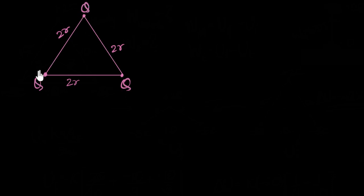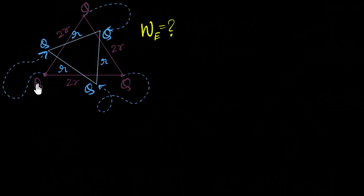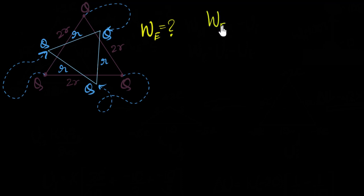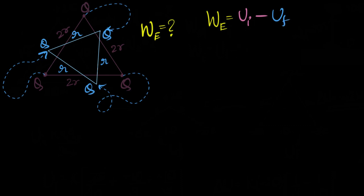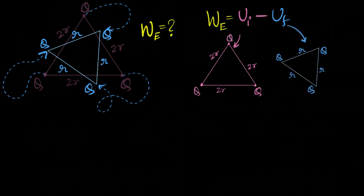Let's quickly try one more. We have three identical charges kept at the vertices of an equilateral triangle. An external agent — me — moves all three charges so that they form a new equilateral triangle with edge length r. Moving it very slowly without any acceleration, what is the total work done by the electric field? The work done by the electric field is the negative of the work done by me — so it's initial potential energy minus final potential energy.